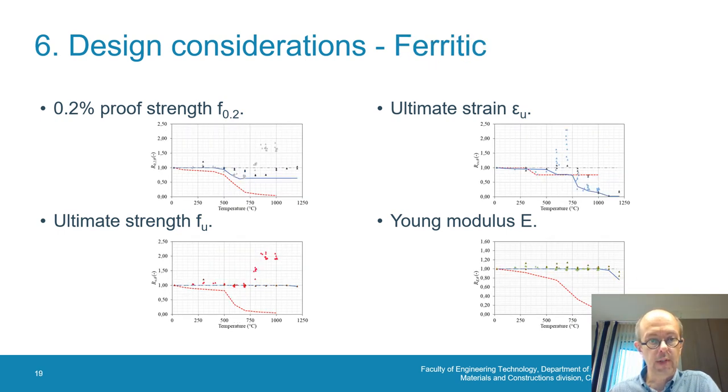For ferritic grades, we see a more important reduction of the proof strength, almost no reduction in the ultimate strength. The ultimate strain, there is a two-step, and the Young modulus is almost not influenced by the post-fire behavior.